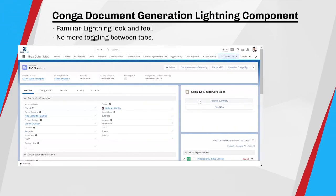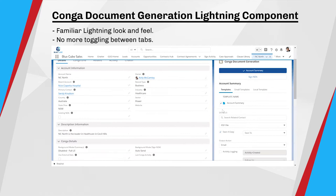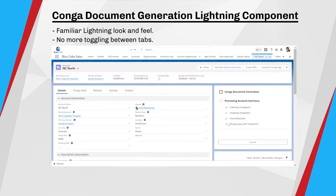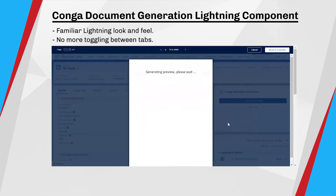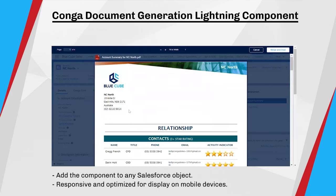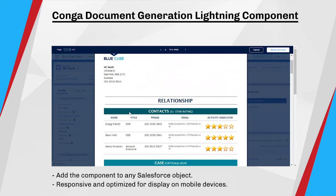Add the Conquer document generation lightning component so users can generate documents directly from any Salesforce record. As you can see, it is seamless with the lightning look and feel, so users will take to it naturally. Users don't need to leave the page at all even to preview the document, which is such a boost for productivity and makes toggling between tabs a thing of the past. You can add the component to any object, both standard and custom objects.